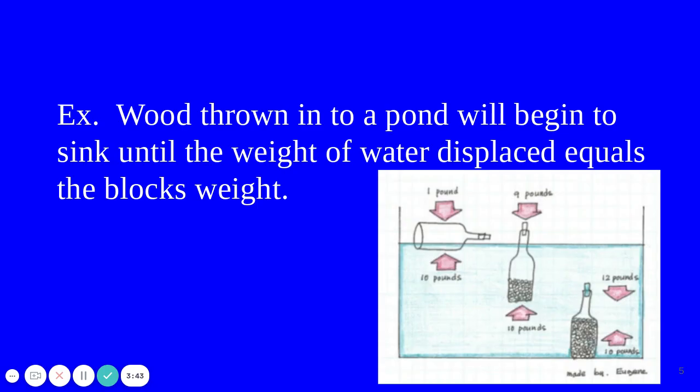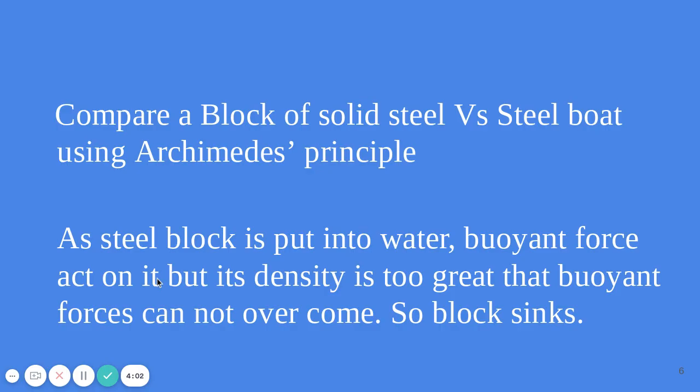For example, wood thrown into a pond will begin to sink until the weight of the water displaced equals the block's weight. Depending on how dense the wood is, it may float higher or lower. Now if you take a steel block and throw it into the water, the buoyant force acts on it, but the density of that block is too great and the buoyant force cannot overcome it, so the block sinks to the bottom.